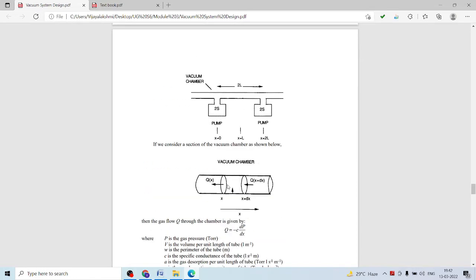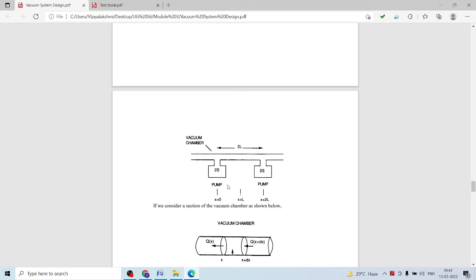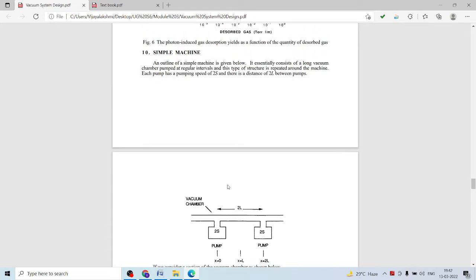This is a simple machine. So this consists of a long vacuum chamber from that regular intervals. Each pump has a pumping speed of 2S and there is a distance of 2L between the pumps.